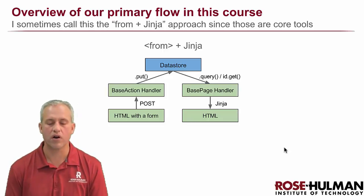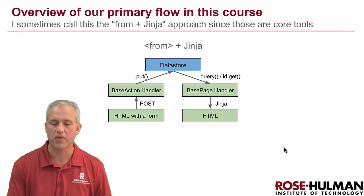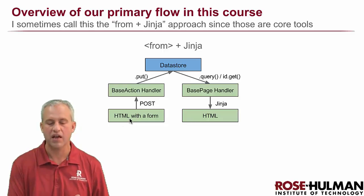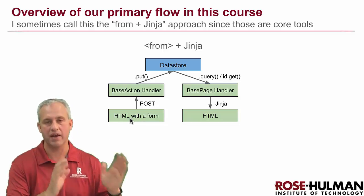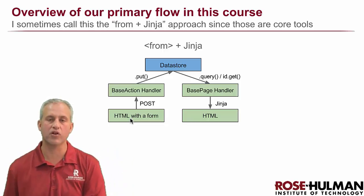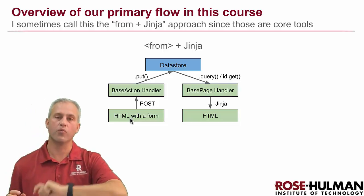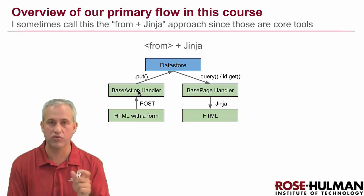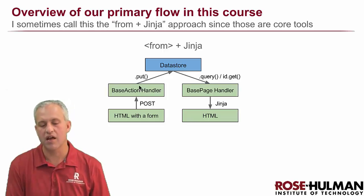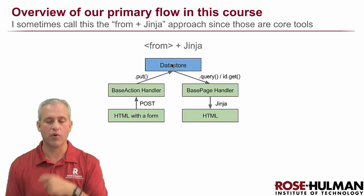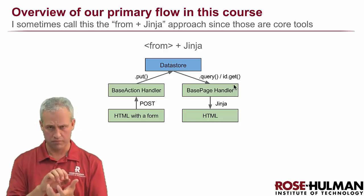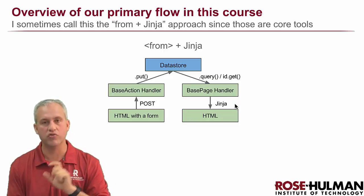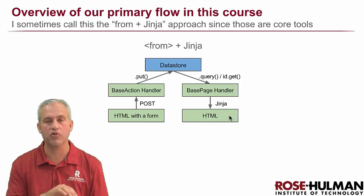What we've done before is the approach I would call the Forms Plus Jinja approach. With the Forms Plus Jinja approach, the HTML was very powerful. You would make a form in your HTML with input fields that had name attributes on them. When you hit submit, that form would make the post to the back end. From your back end, you would pull the information out of the form post using form encoding. You would put stuff into the data store. Whenever we wanted to read things, we would do queries or ID gets if we had the key. That would go into a page handler, and then that page handler would use Jinja to put information into the page. That's the approach we've been using this whole time.